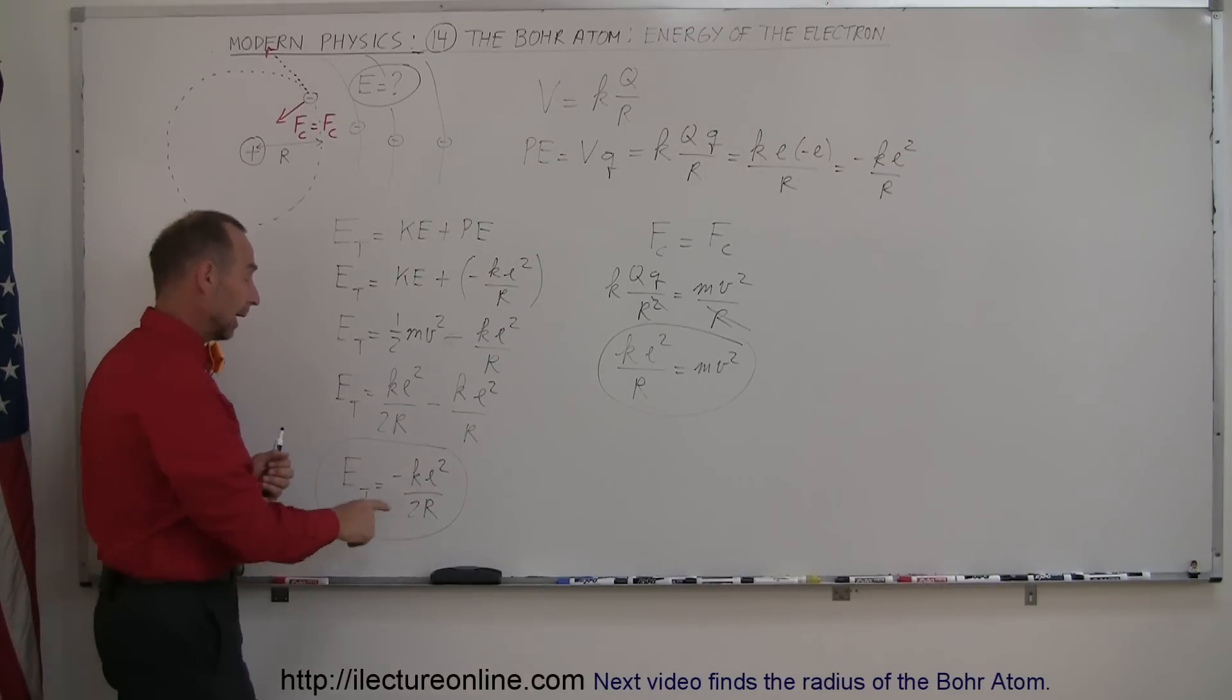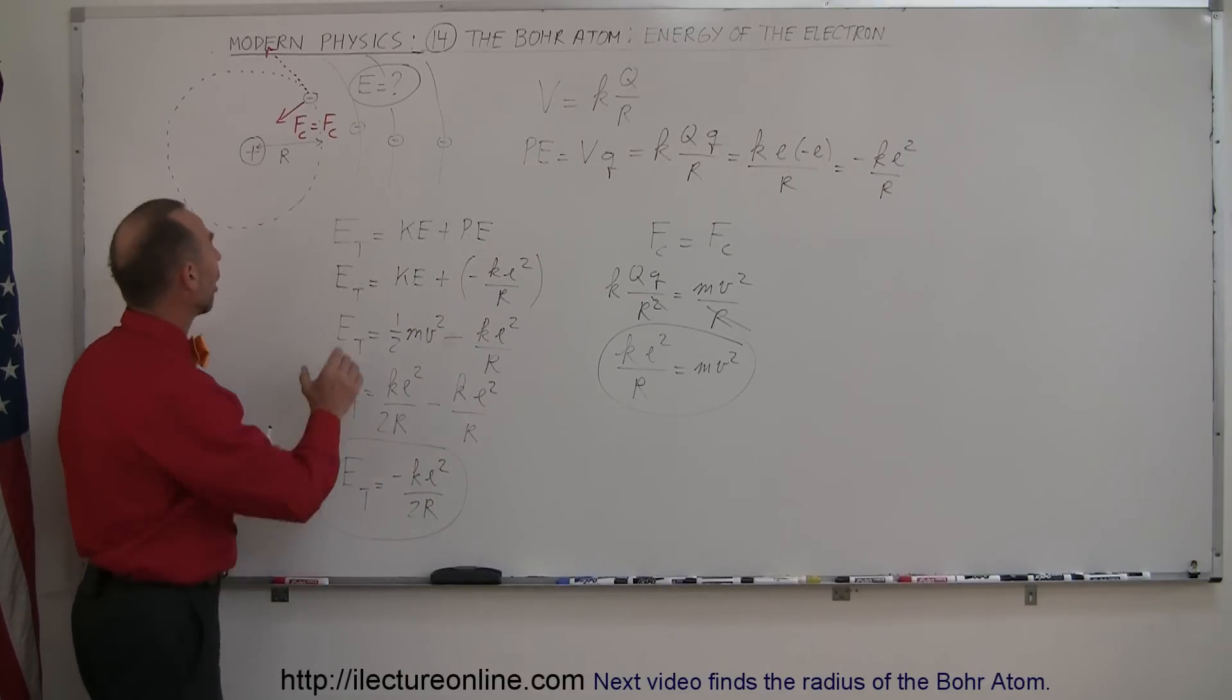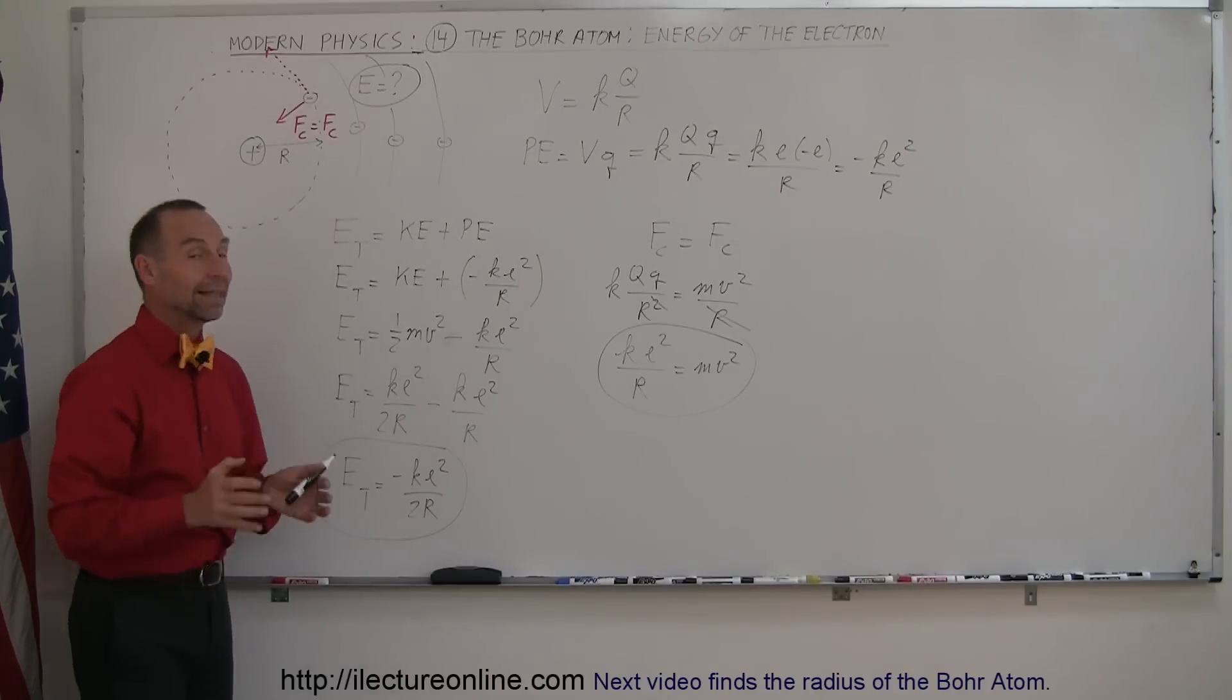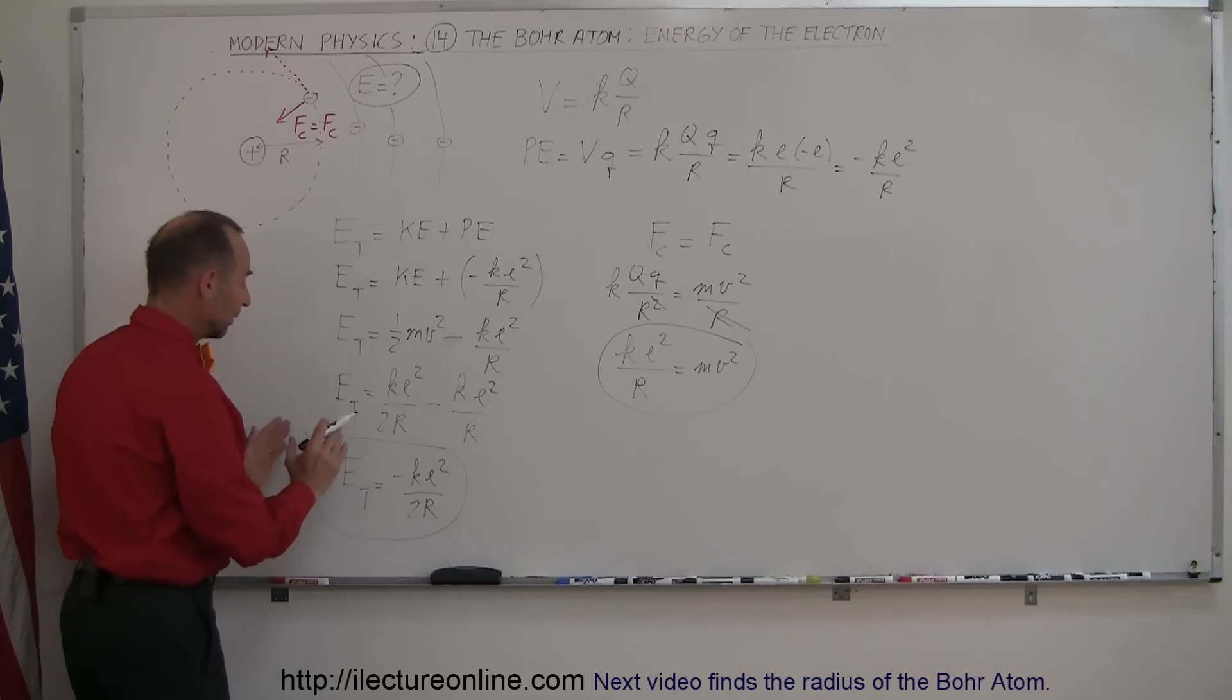The problem is I cannot yet evaluate it. I know what K is (9 × 10⁹), e is simply the charge of a single electron, but I don't know yet what the radius of the orbit is. To find that you need to come to our next video.